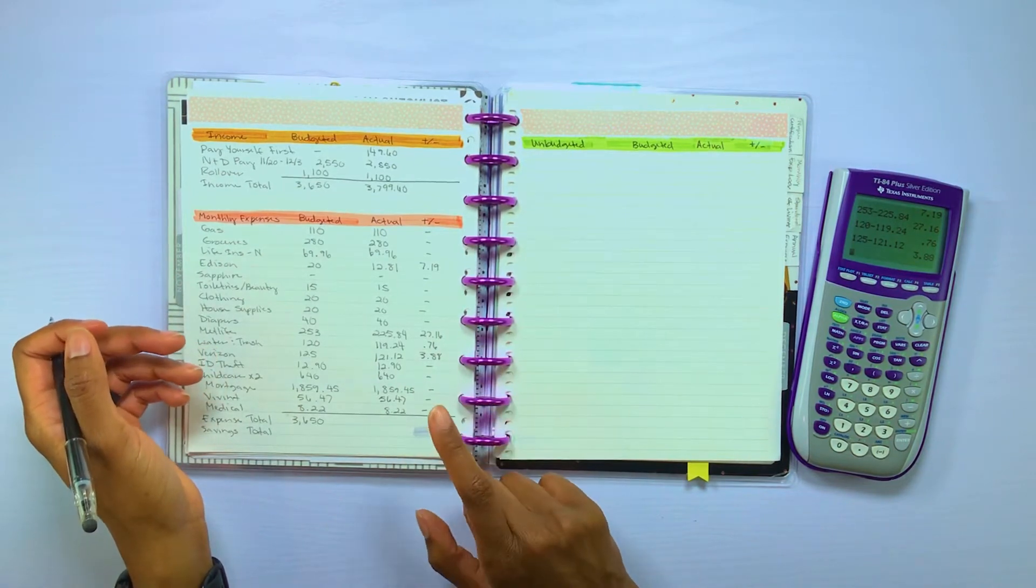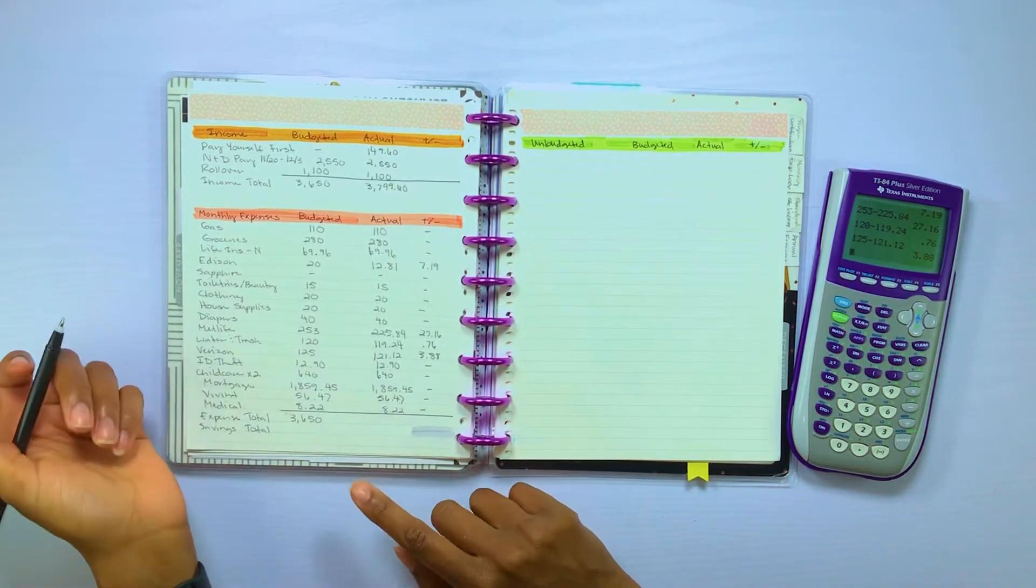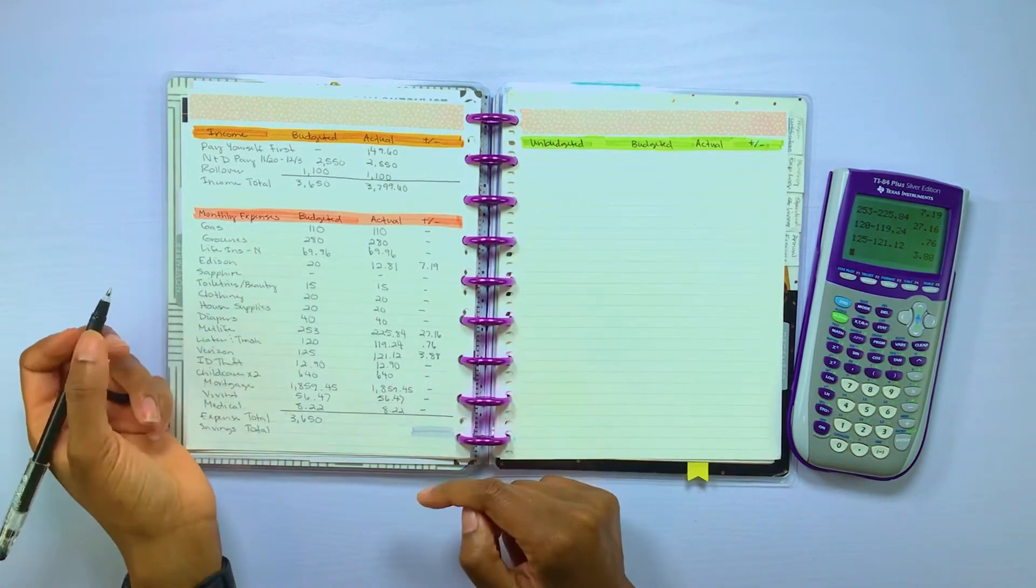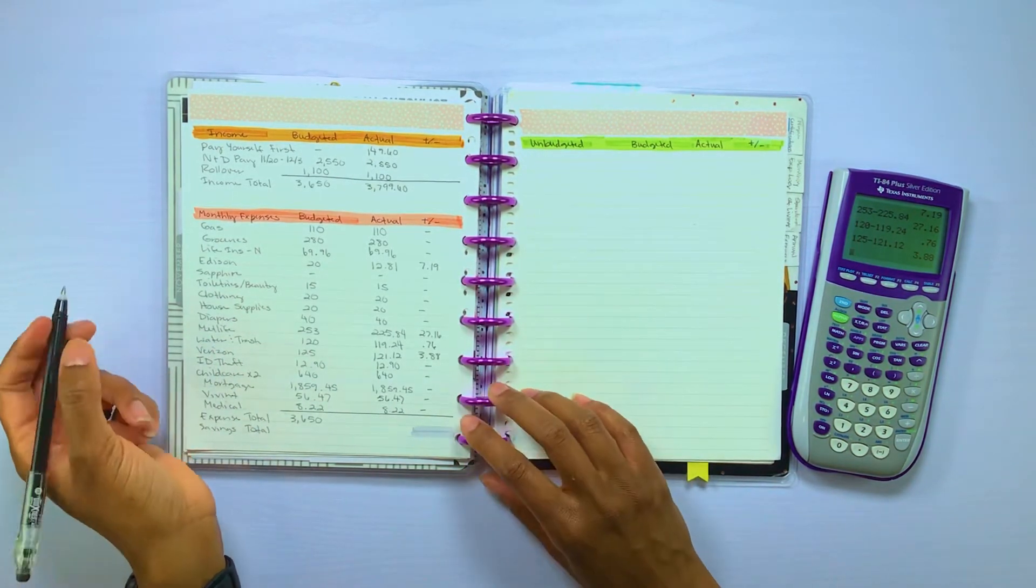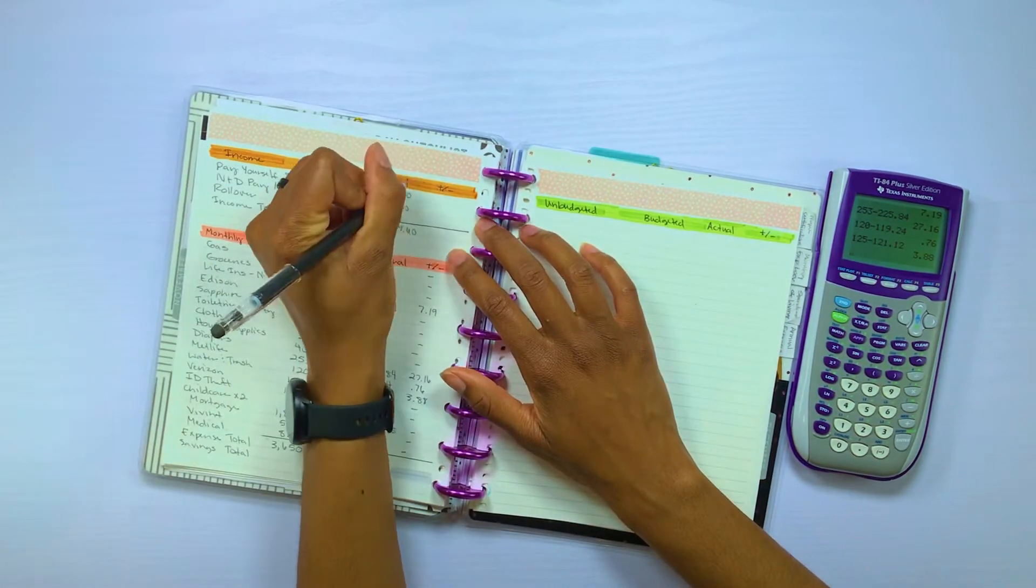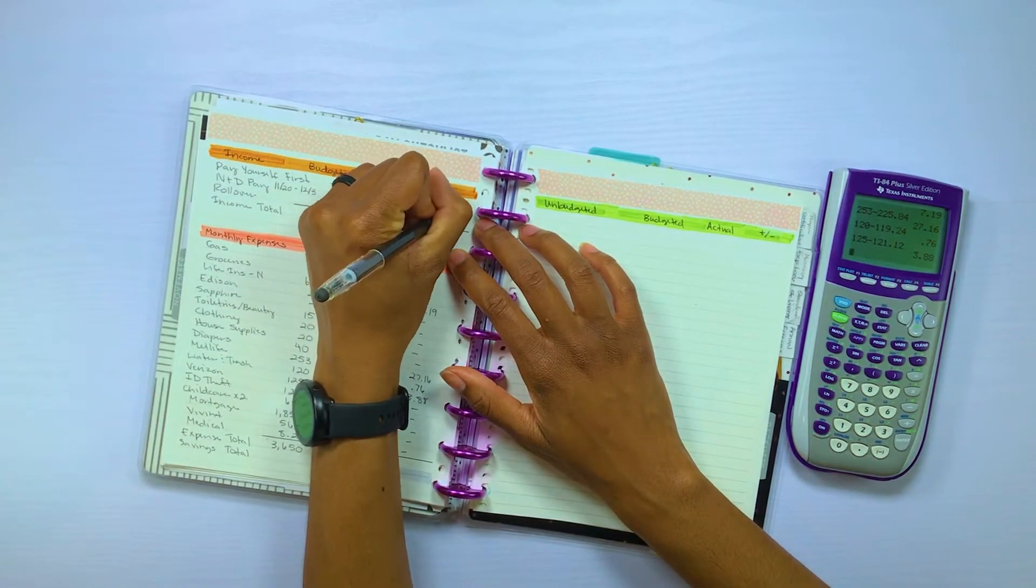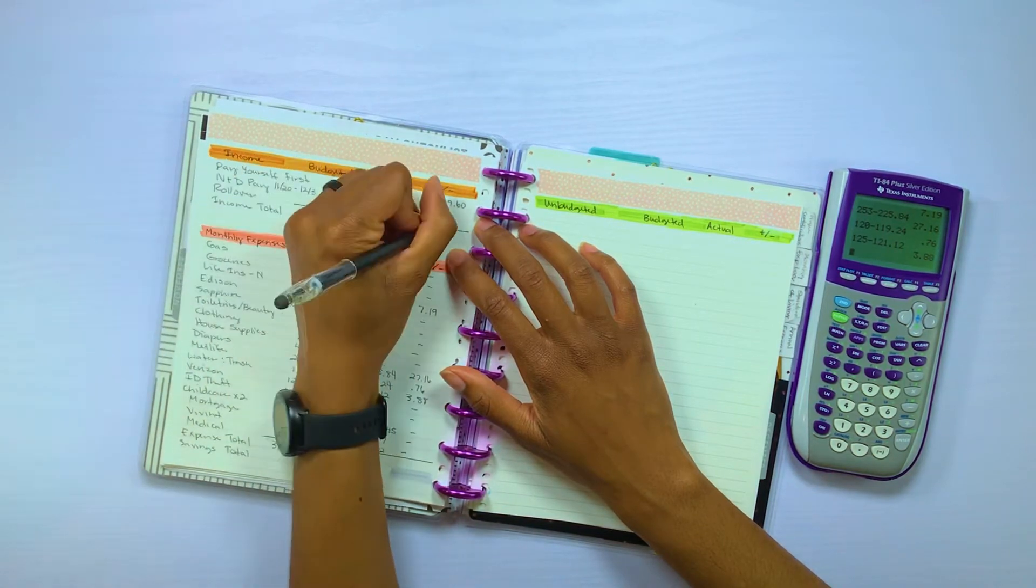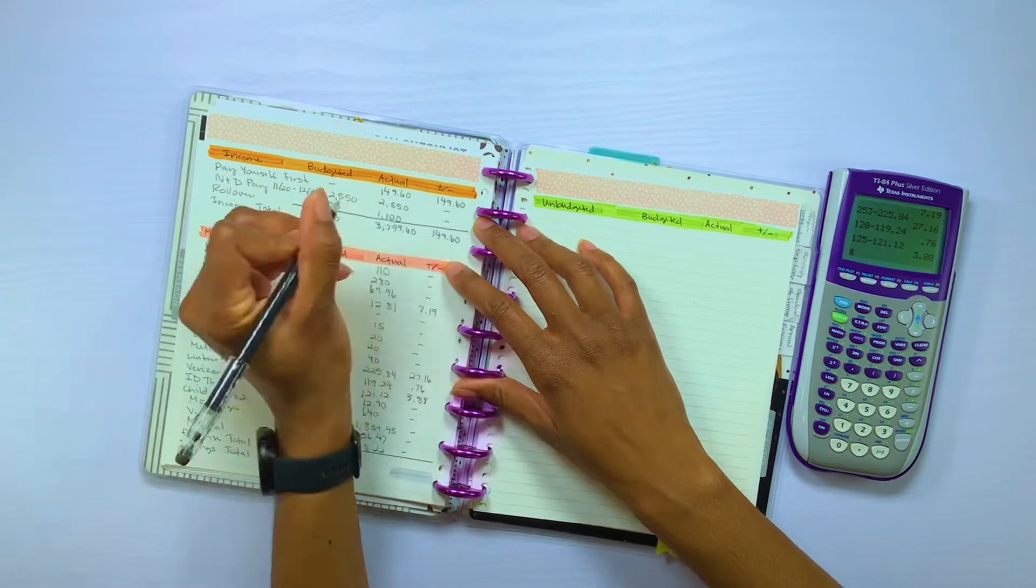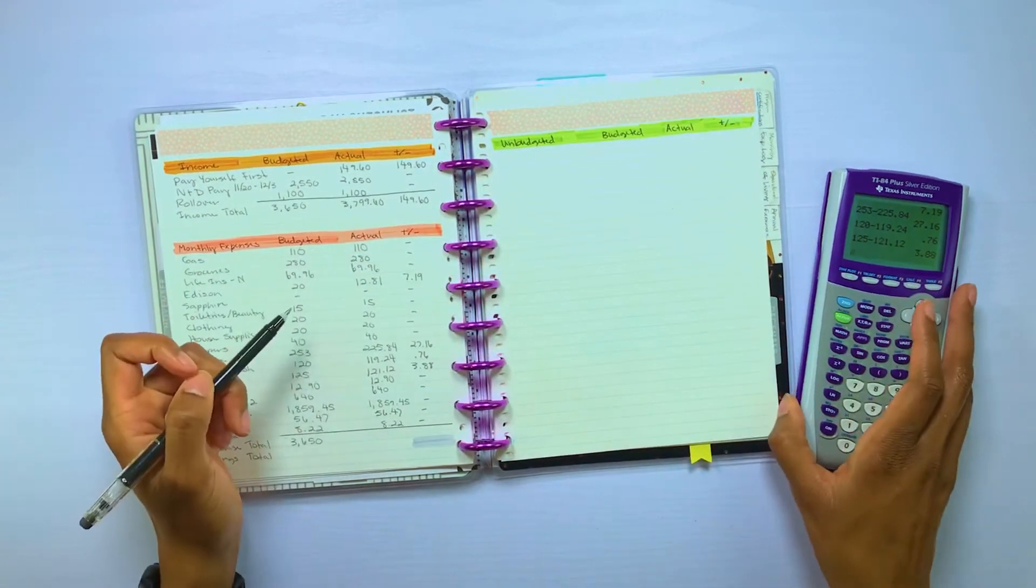That is what I do with the money, part of what I tell you in our budget closeout videos that I do every month. So let's go ahead and do the difference between the income. So let me go ahead and add up my actual expenses.